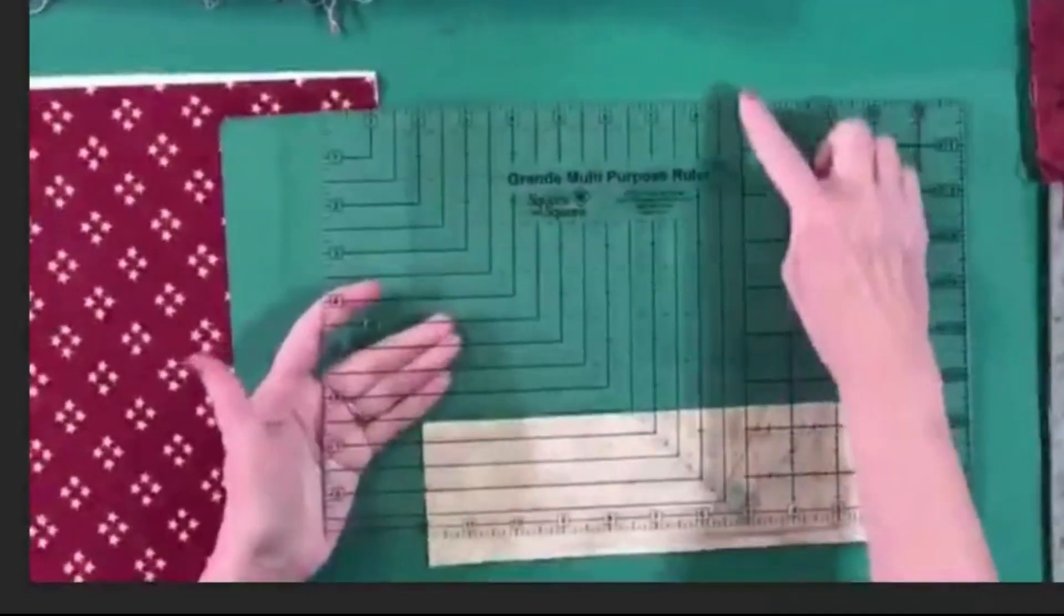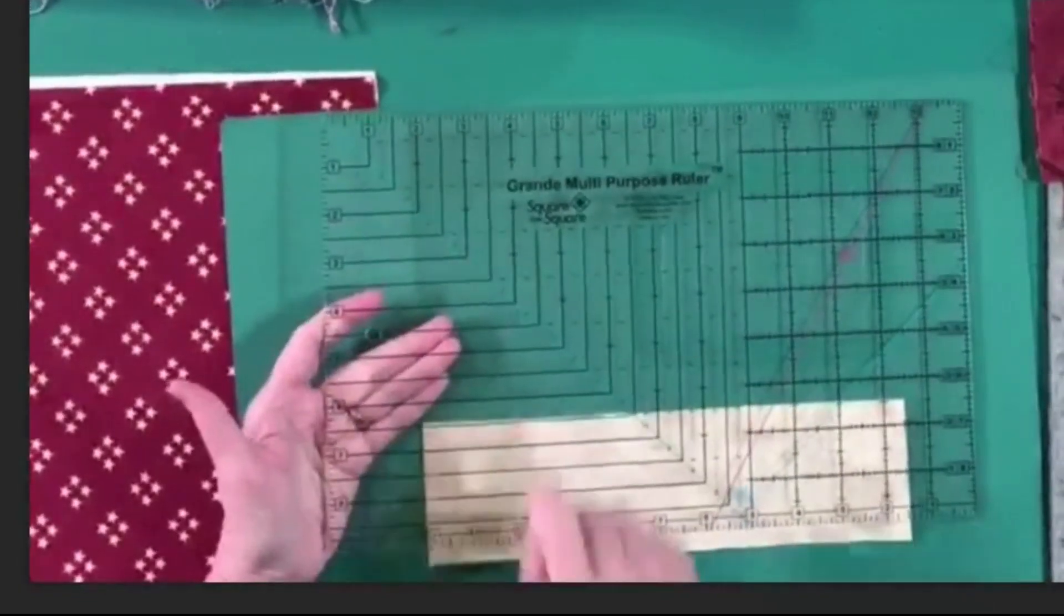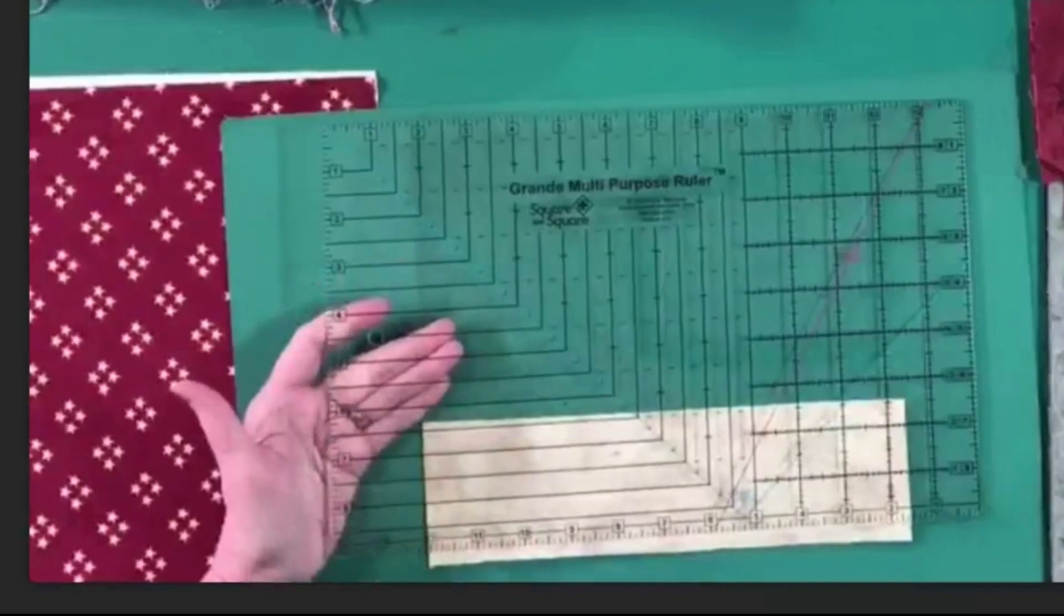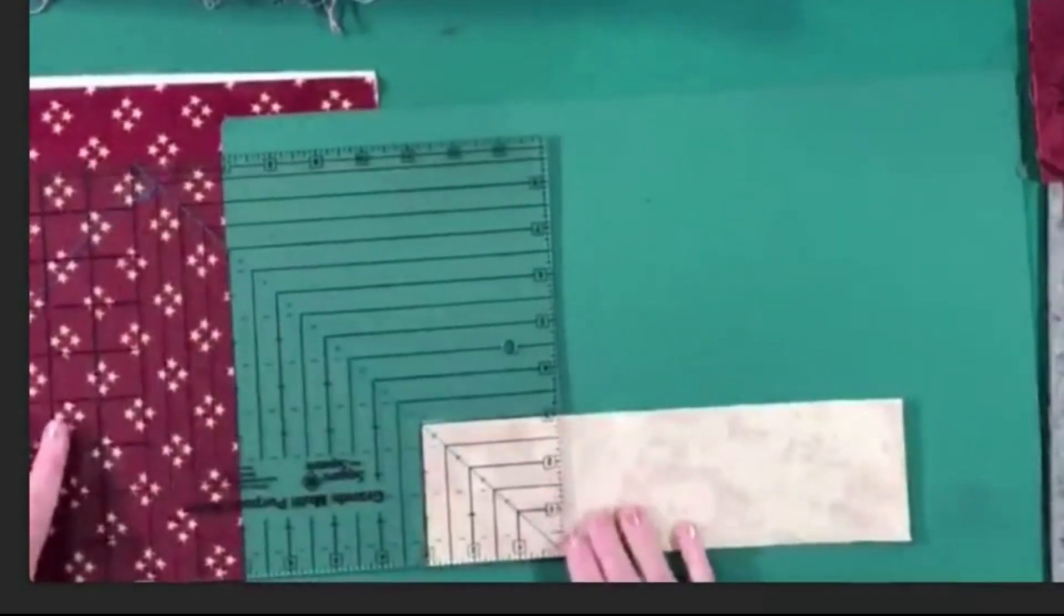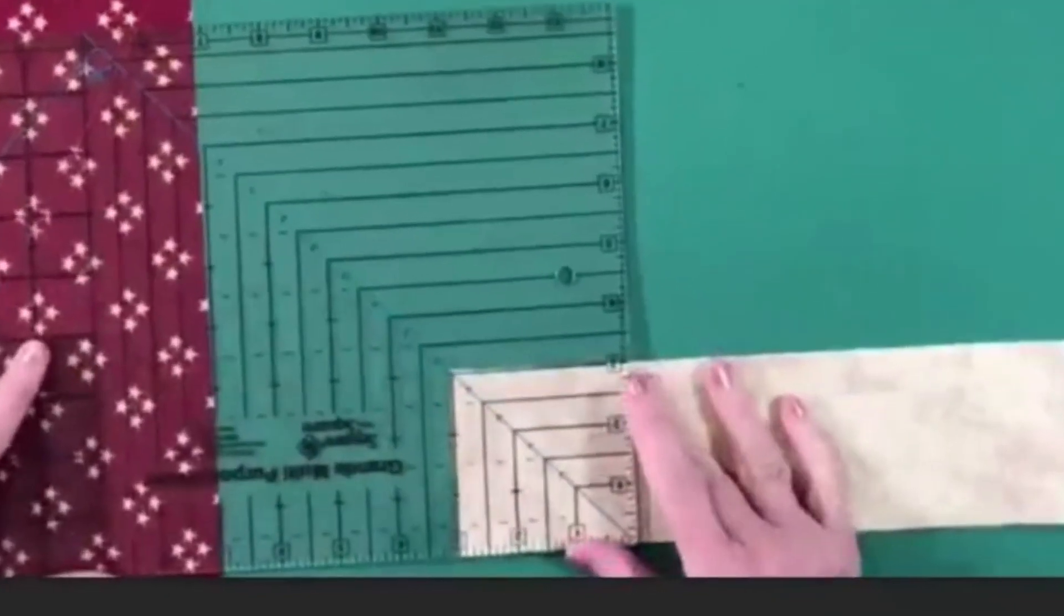So now on the Grande ruler, you can see here how we have this large nine inch, what we call a corner square. And I'm going to use three inches in here to make, so I'm just going to come in here and I'm lining my three inches up along the two cut edges.